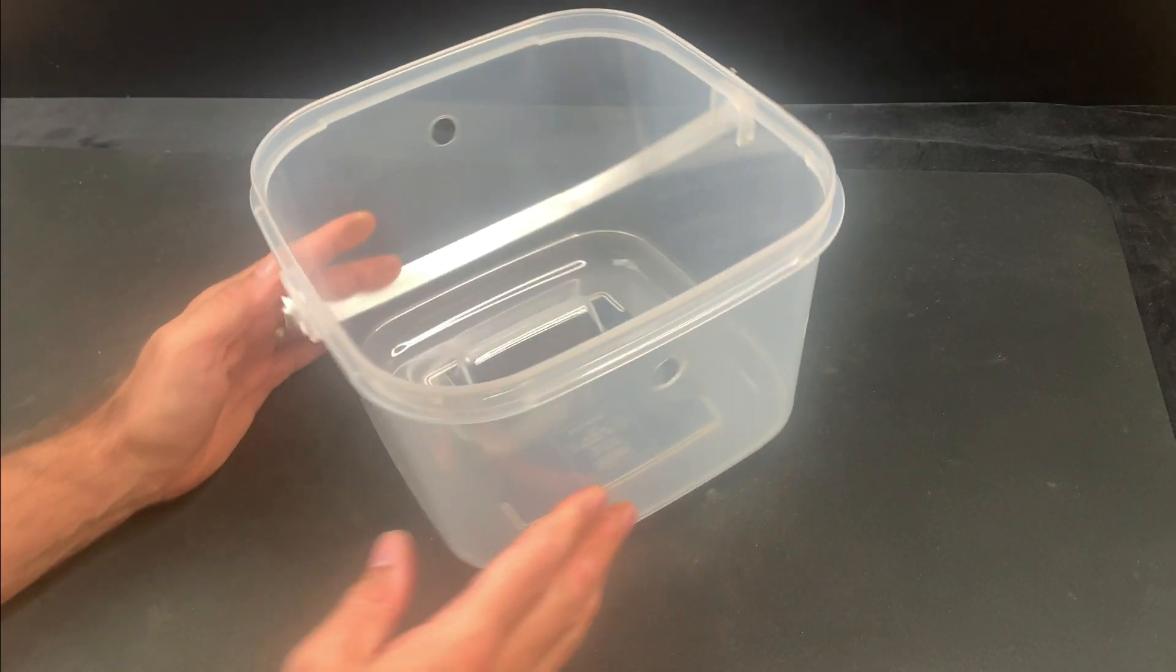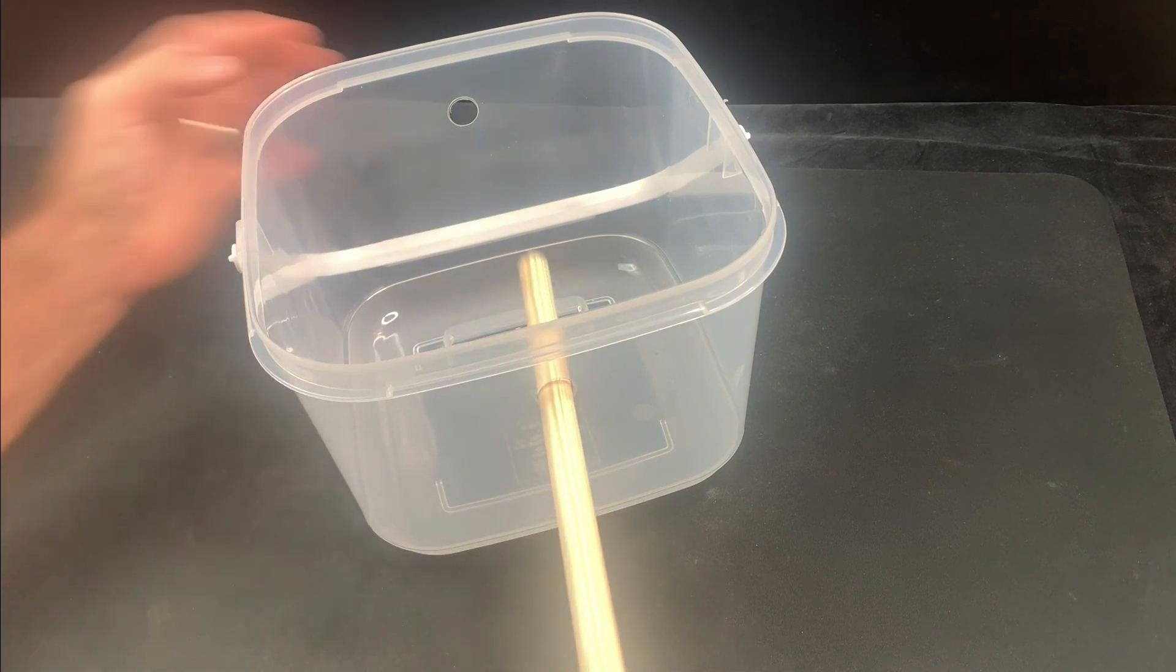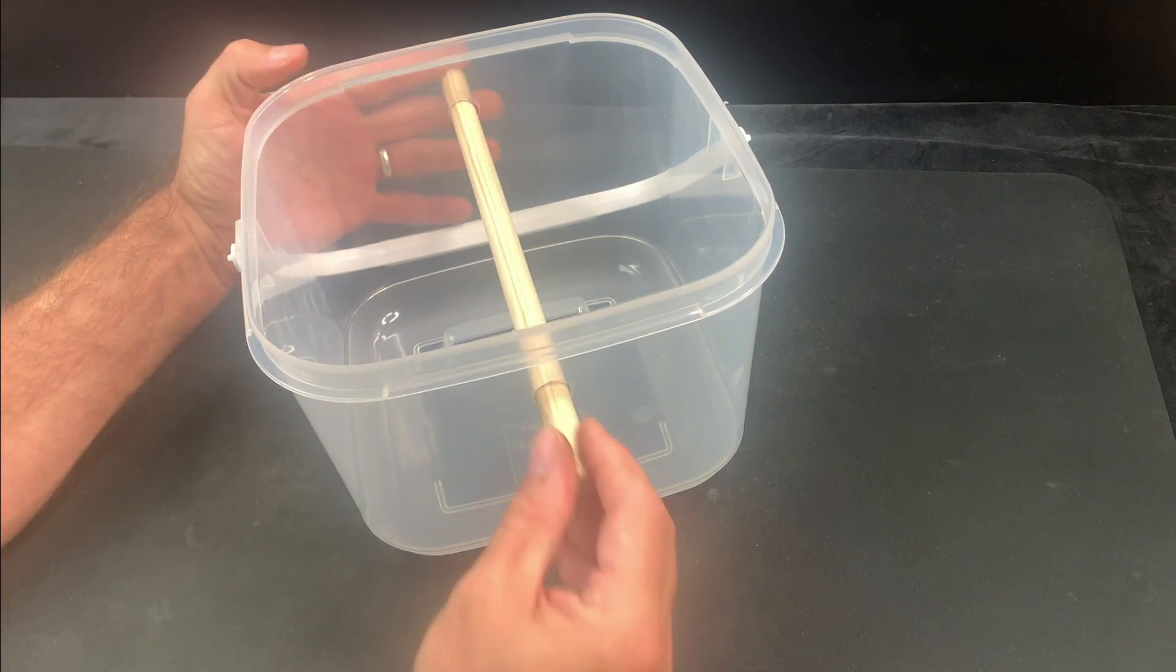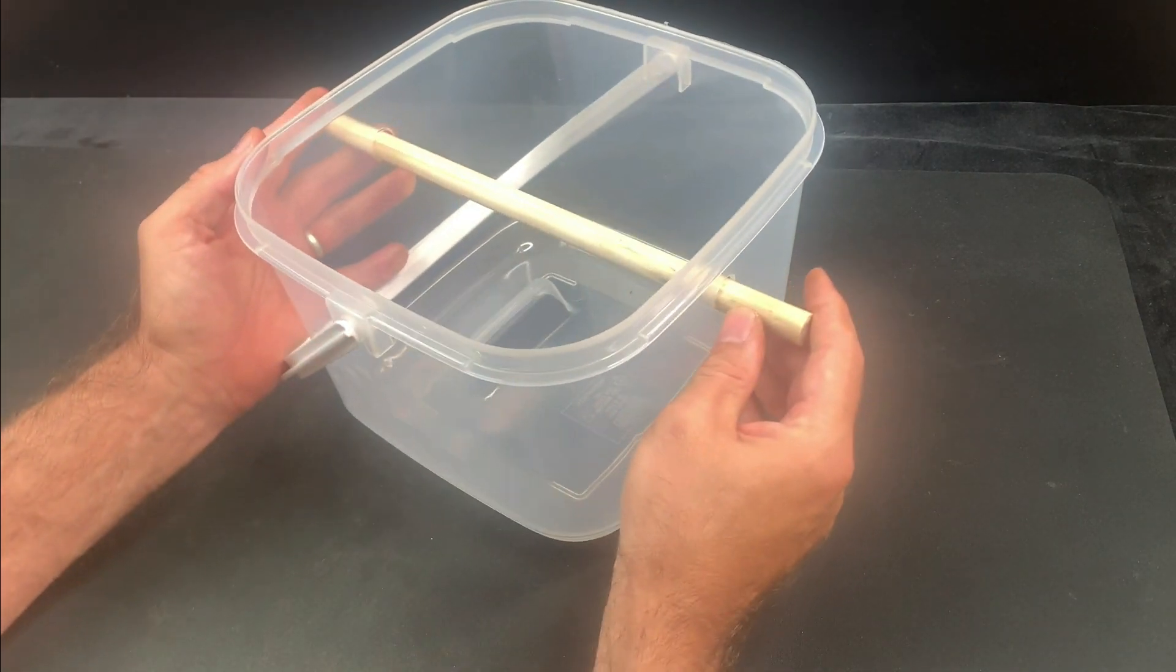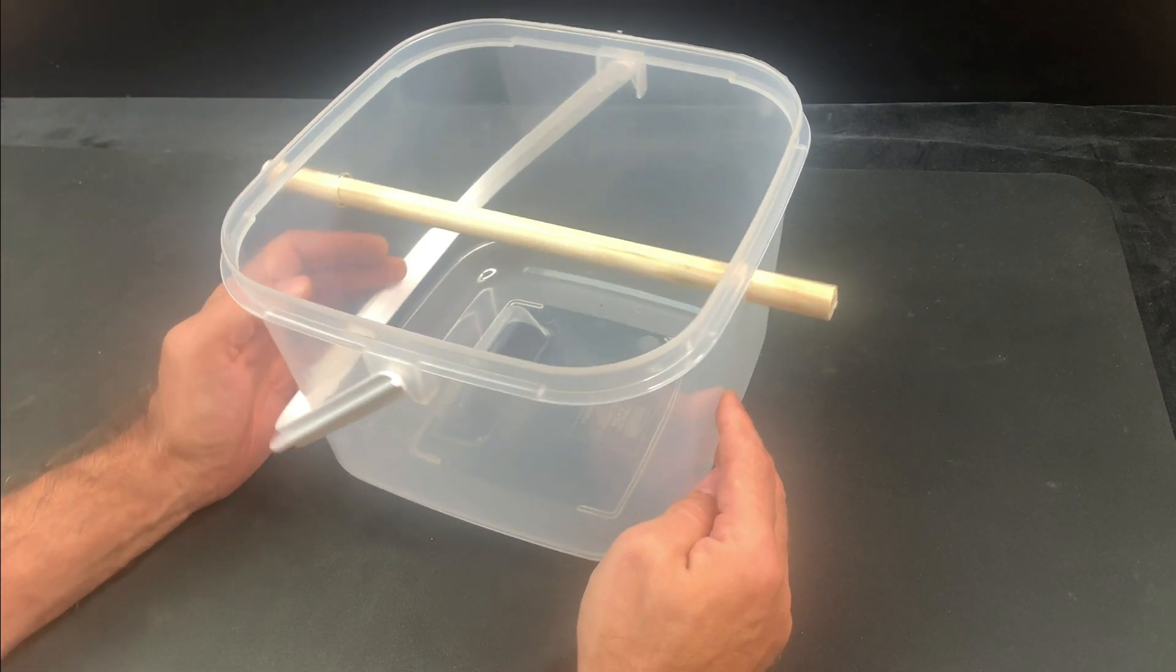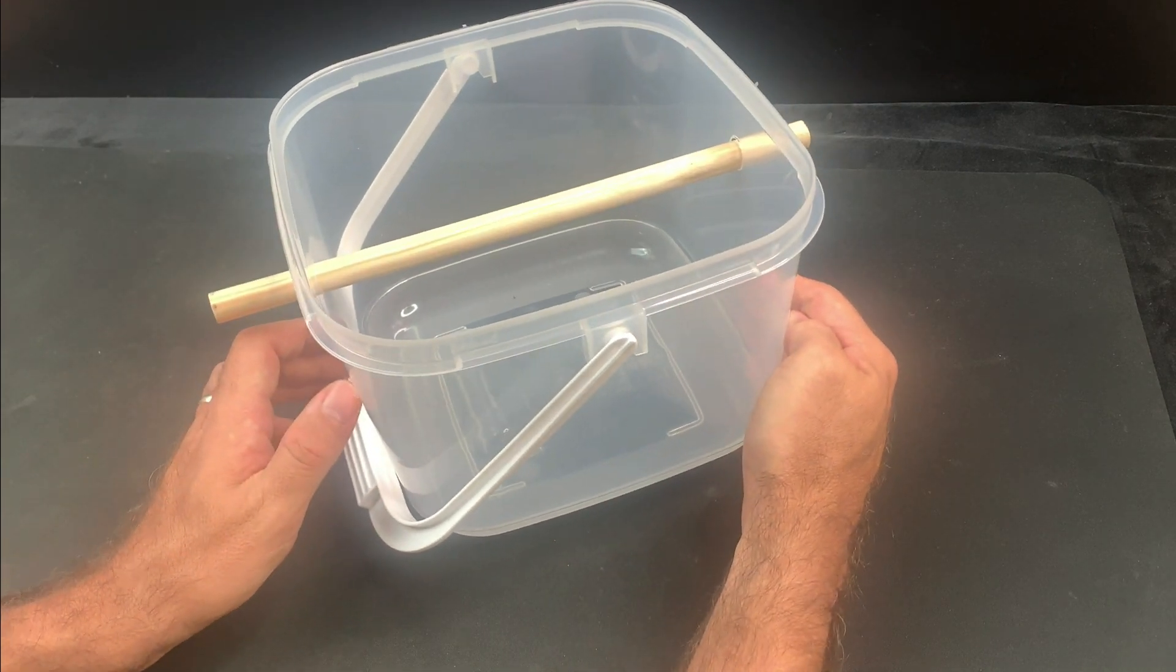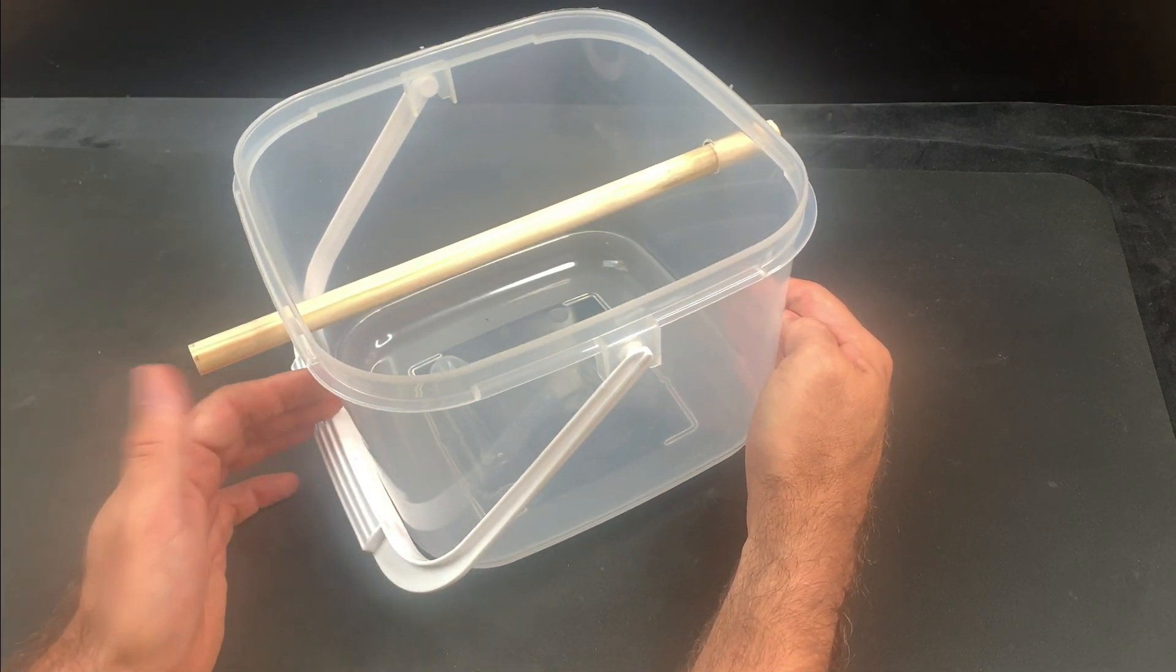First get hold of a plastic tub with dimensions large enough to accommodate the locks that you want to restore. In this case I've drilled a hole at each end and I've run a length of dowel through them which will allow me to hang several locks in the bath at the same time rather than lay them on the bottom of the tub which would result in potentially uneven treatment.